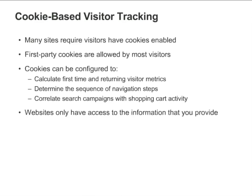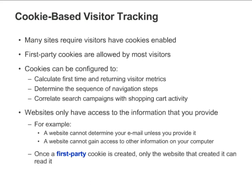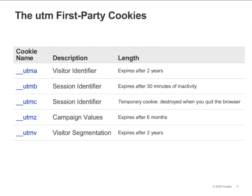Remember, websites only have access to the information that you provide. Websites can't get your email address or access any information on your computer unless you provide it. And since Google Analytics only uses first-party cookies, Google Analytics cookies can only be read by the website that created them. Google Analytics sets five first-party cookies. The UTMV cookie is optional and will only be set if the SetVar method is called. You will learn about SetVar in the module on Custom Visitor Segmentation.